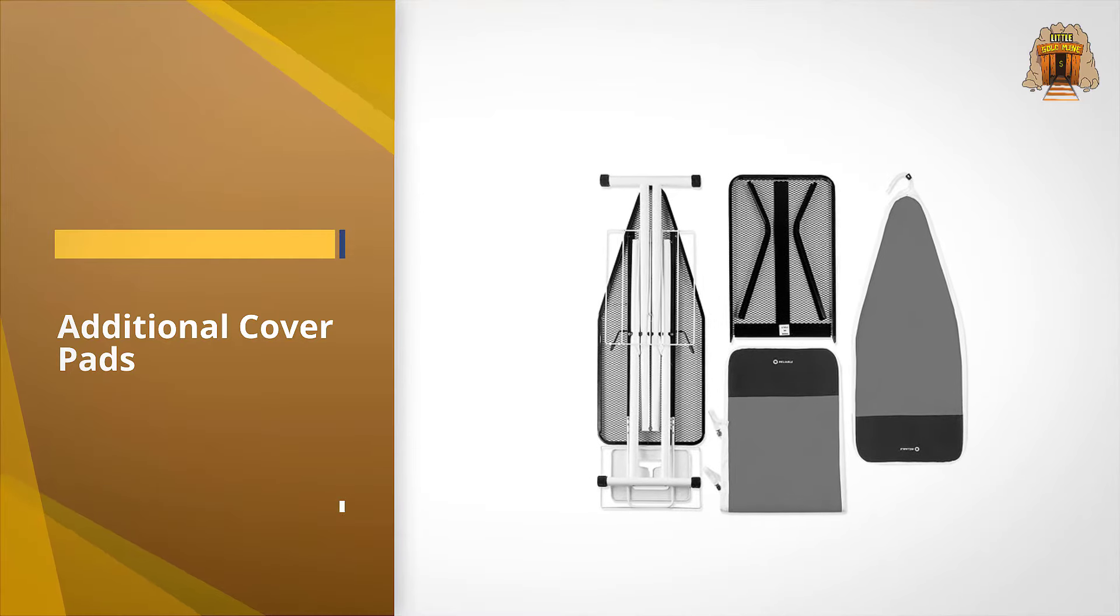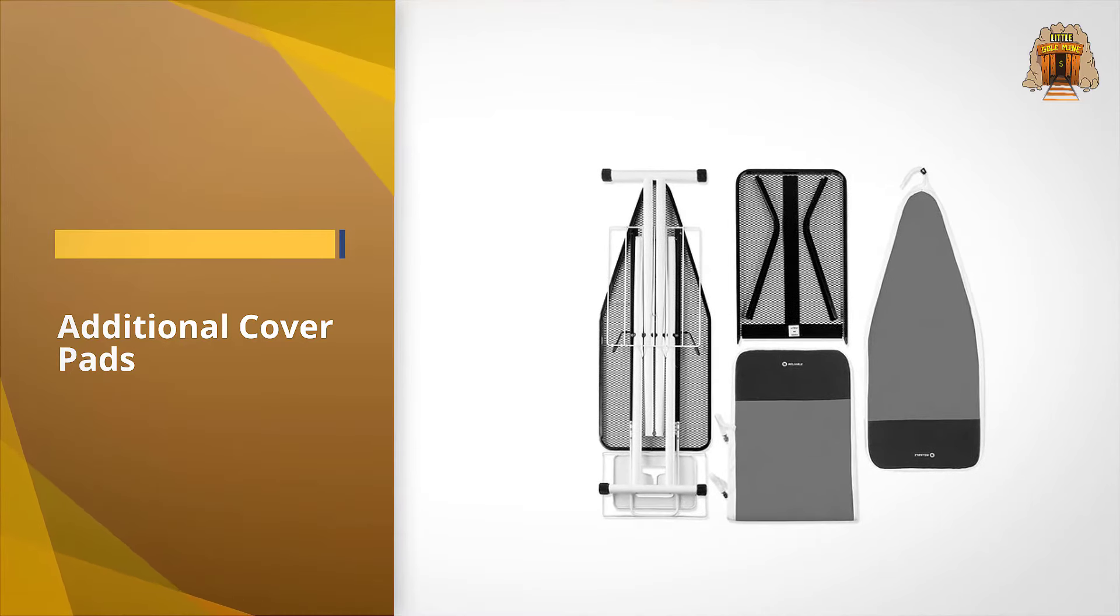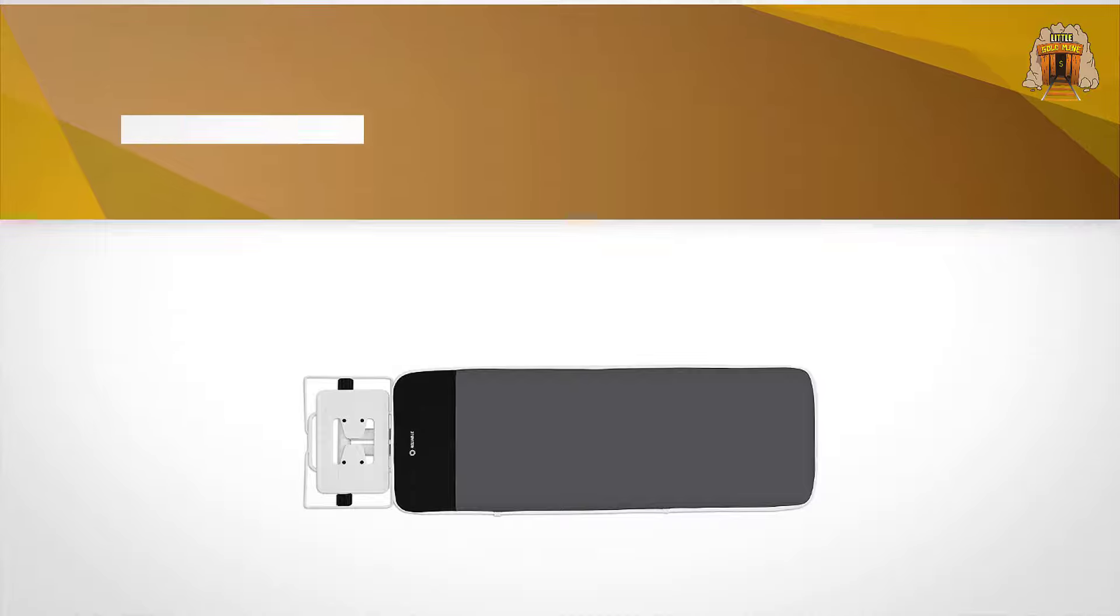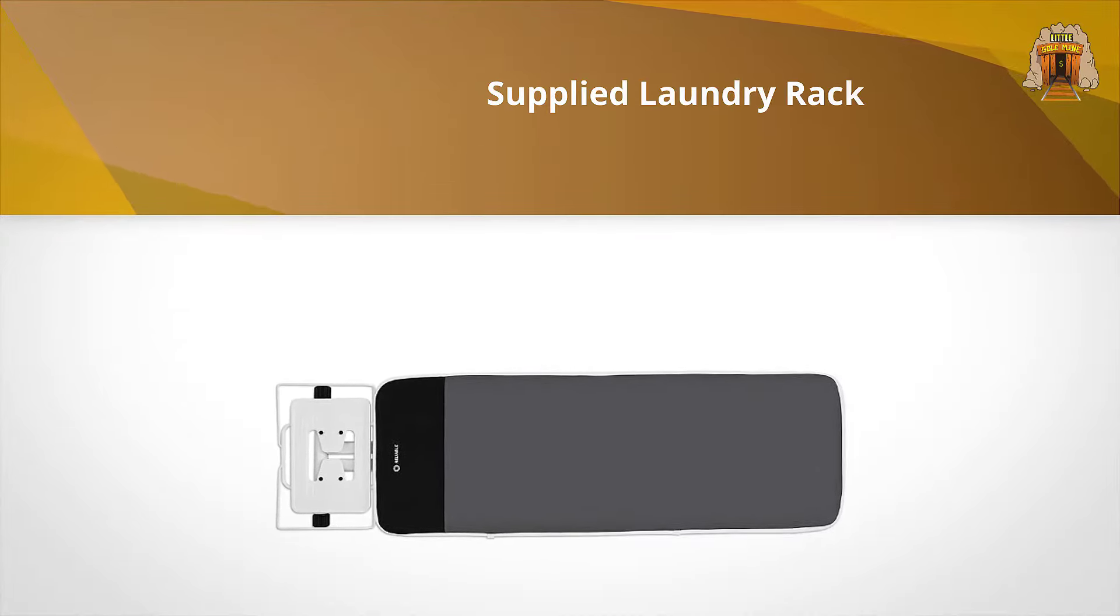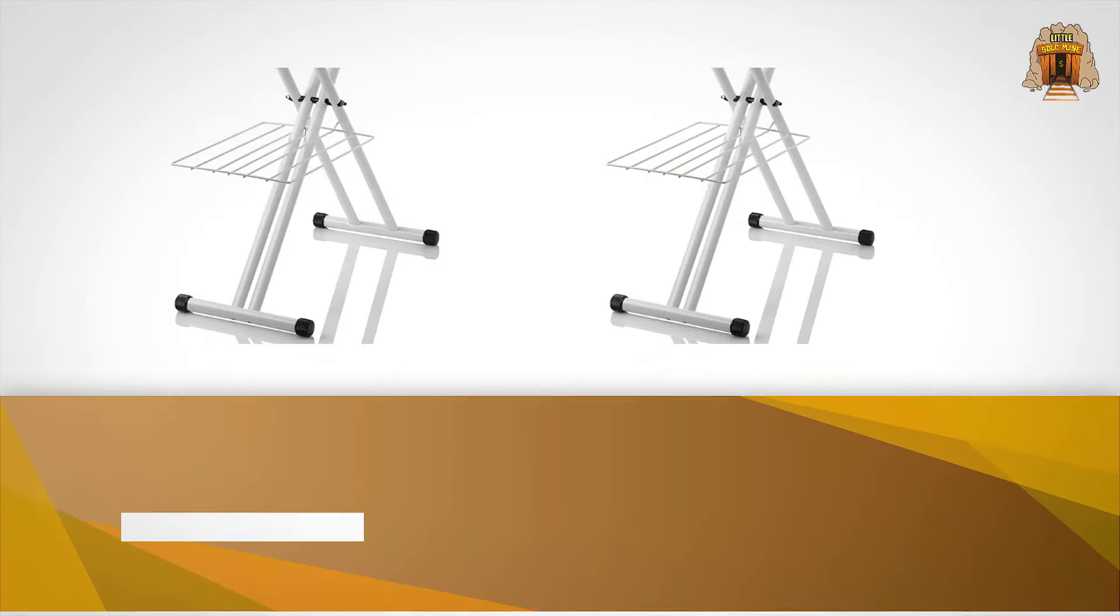This allows you to use it as a regular ironing surface and then switch quickly over to a more extended board whenever you need to, giving you a larger surface in the process from 18.9 by 60 inches to 67 inches if you prefer.